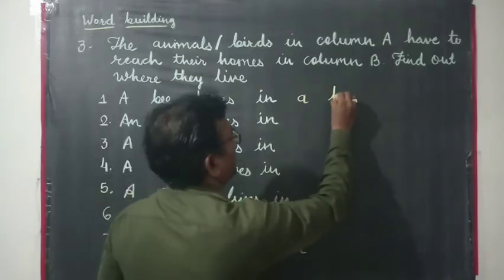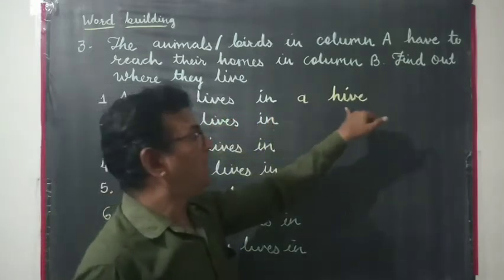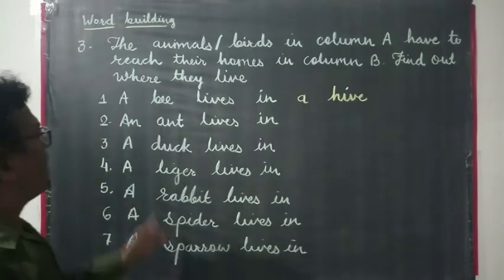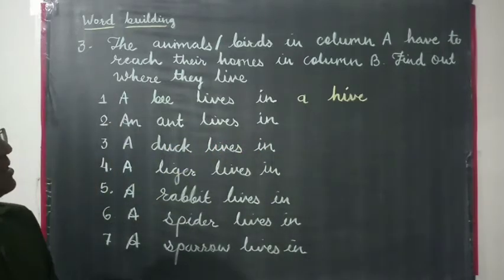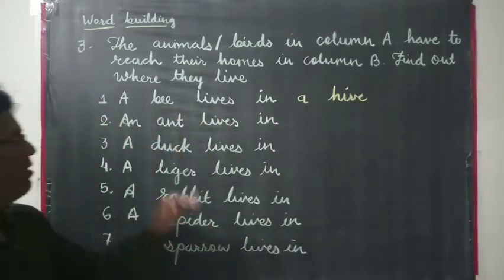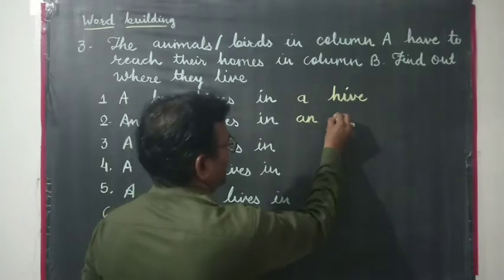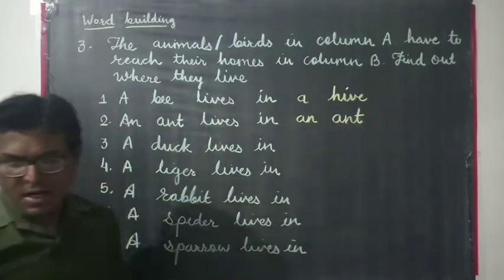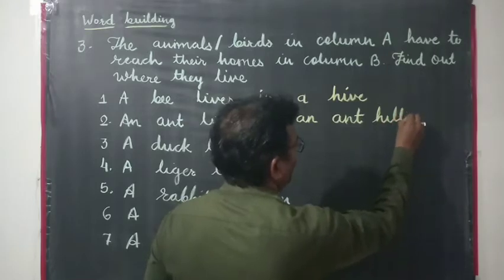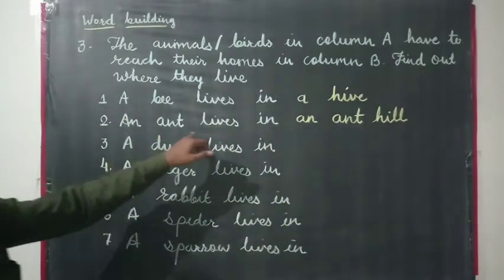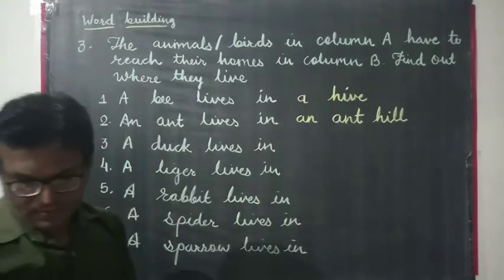Like here, a bee lives in a — yes. This is the picture of the home of the bee, and it is called a hive — H-I-V-E. An ant lives in an ant hill. The ant lives in an ant hill.